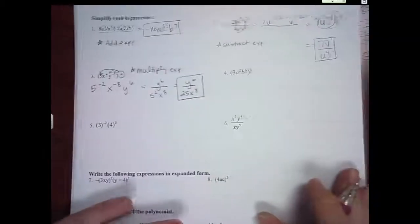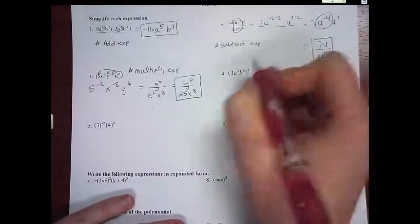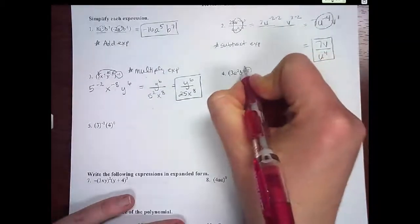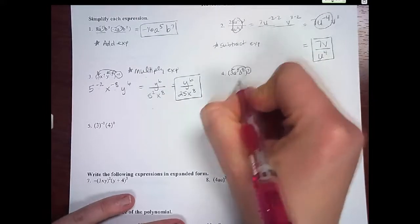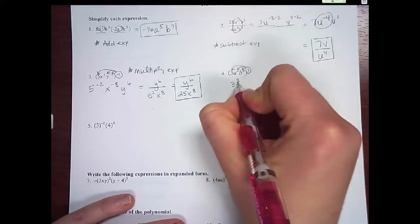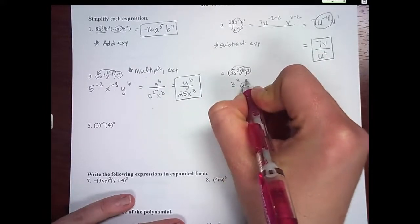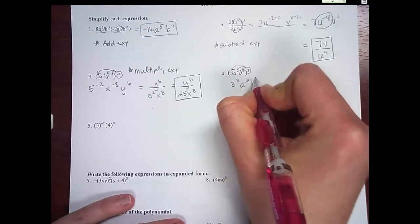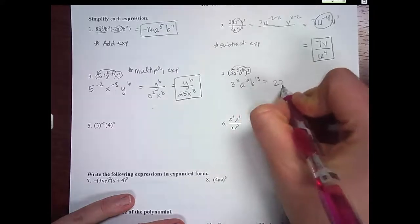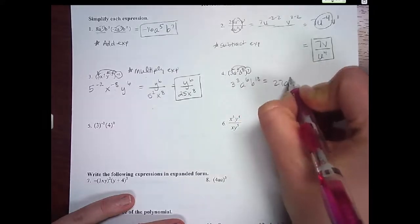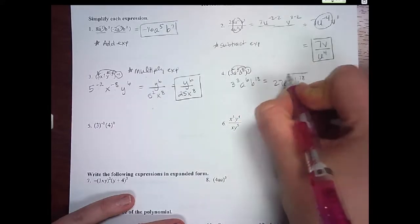Number 4, same scenario — distribute the 3. So 3 to the 3rd, a to the 6th, b to the 18th, which would be 27a⁶b¹⁸.